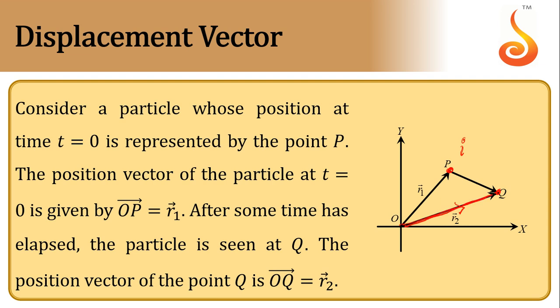How do I get it? From the origin, draw a line towards the point Q. You will get the final position vector. This is the initial position vector and this is the final position vector.